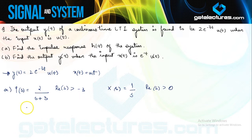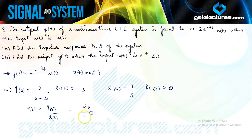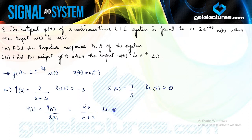Now if I try to find out the system function H(s) — defined as output upon input — keeping those values you will see that the system function is going to be 2s/(s+3). This function has only one pole which occurs at s = -3. Since both signals are right-handed, the ROC is going to be Re(s) > -3.